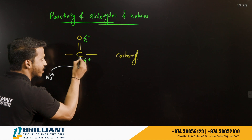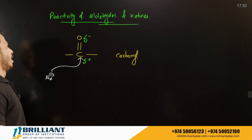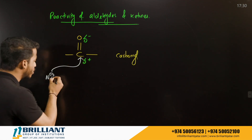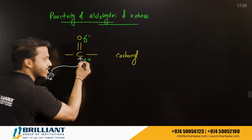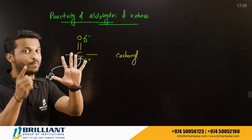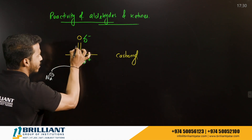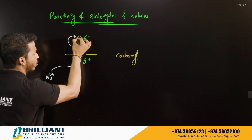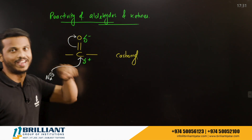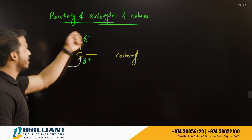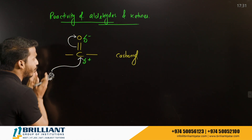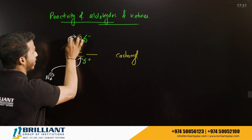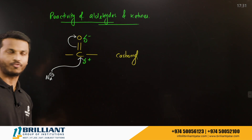The carbonyl carbon already has four bonds. When the nucleophile attacks and forms a bond, the carbon would have five bonds — but carbon's valency must be four. So one of the electrons from the C=O double bond shifts to oxygen, giving oxygen a negative charge (O⁻). This is nucleophilic addition: the nucleophile attacks the carbonyl carbon and O becomes O⁻.